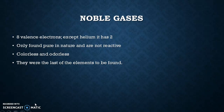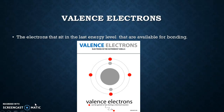Now we start talking about valence electrons, the octet rule, and why certain elements are more reactive than others. Valence electrons are the electrons in the outermost shell — as you can see in the graphic, those are the red electrons in the outermost shell, and this one has four. That means it could either share those four, give up one, or give up all four. It's going to be looking for another element to latch on to so that it can have eight in that outer shell.